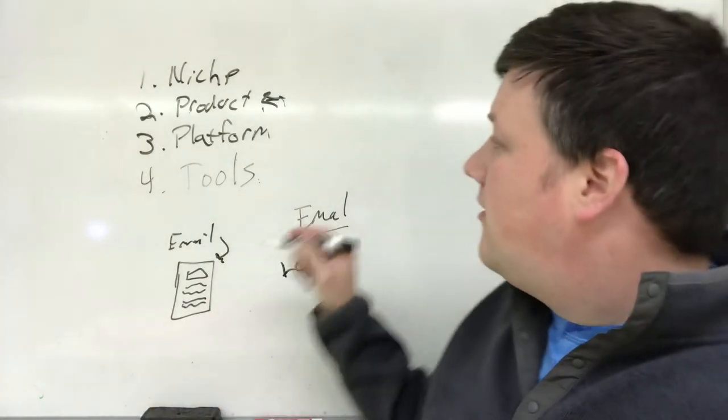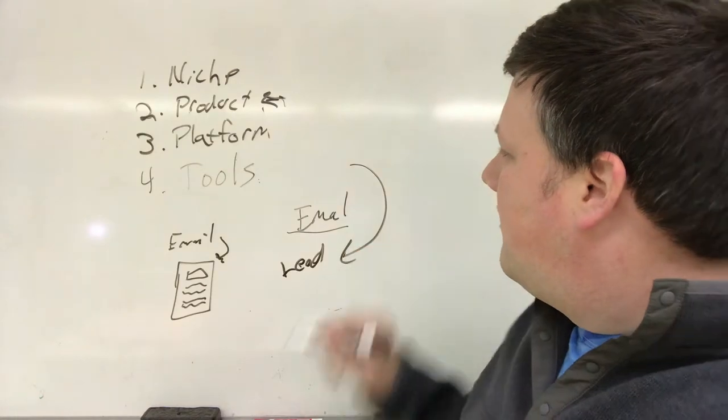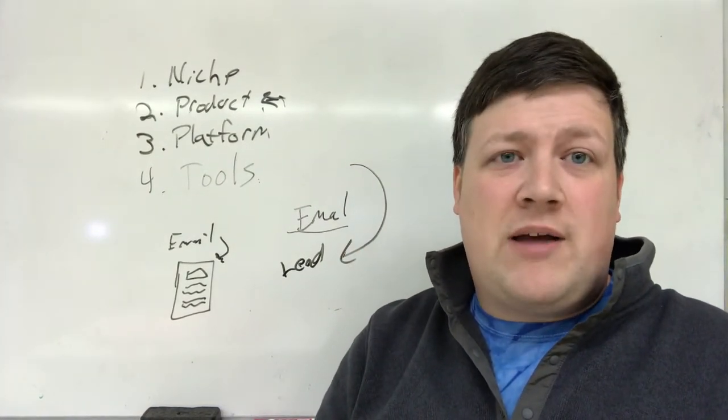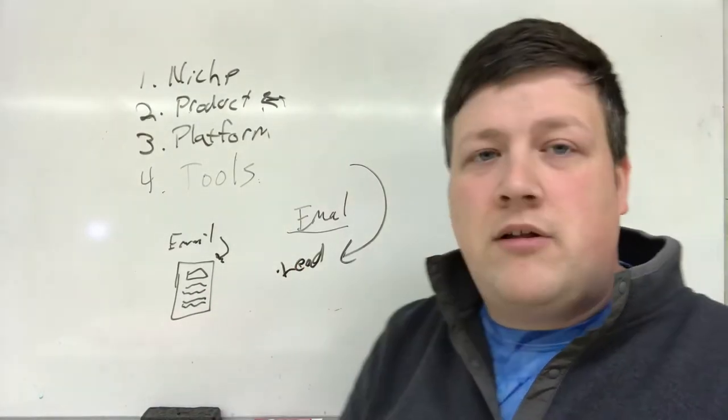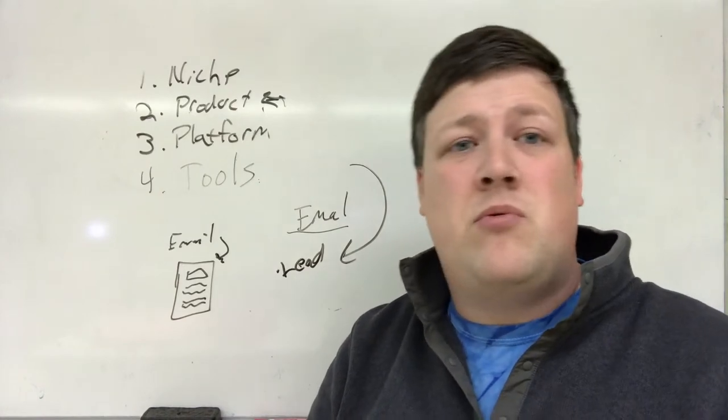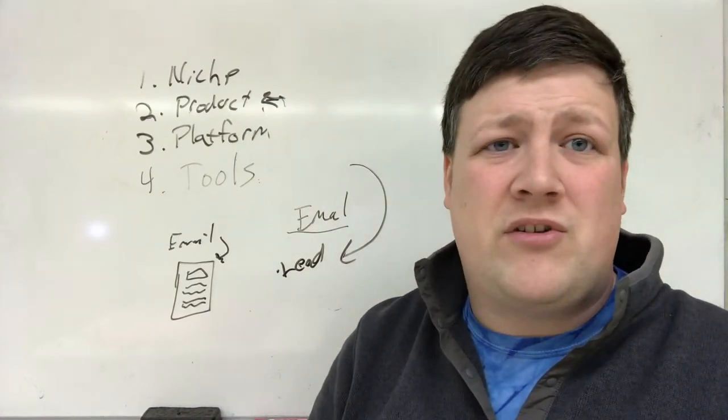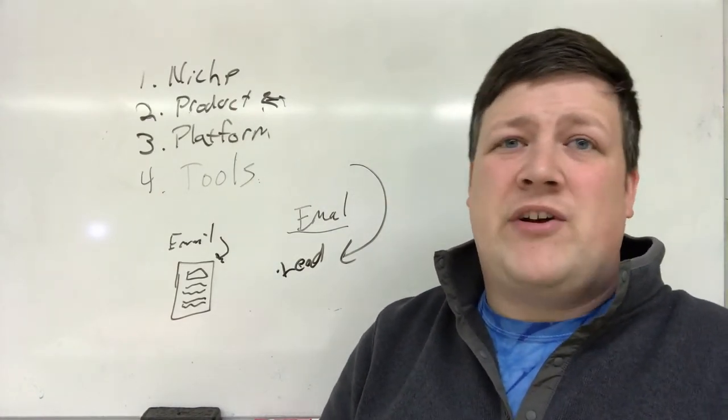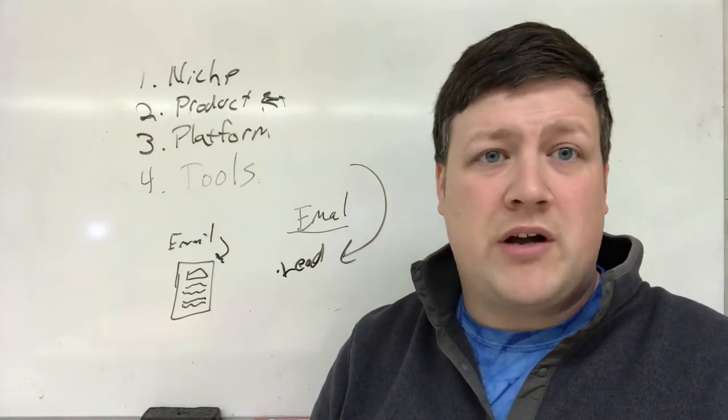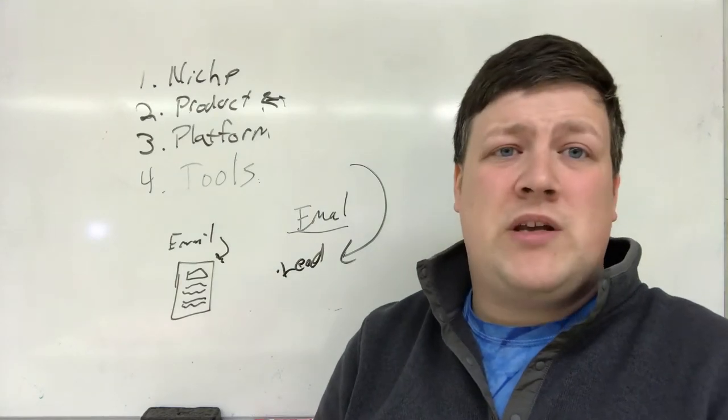Now every product that you sell, everything that you get, can be retargeted back to them. Unless they unsubscribe, you have them forever. That is your person that you can sell to. These email lists can get huge. I've seen people with over a hundred thousand emails on their lists. They're not spamming people every day, so people don't tend to unsubscribe unless you bug them too much.